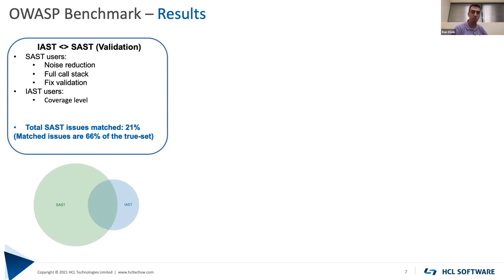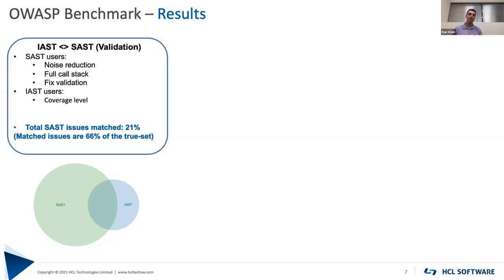After covering the process, we can start talking about the results. After running the correlation algorithm on IAST and SAST, we were actually able to match 21% of the SAST issues with IAST issues. We knew going in that we get a lot of noise from SAST, and we wanted to bridge that gap and allow customers to have a data-driven way to prioritize remediation. We were really happy to see that those 21% represent 66% of the true set.